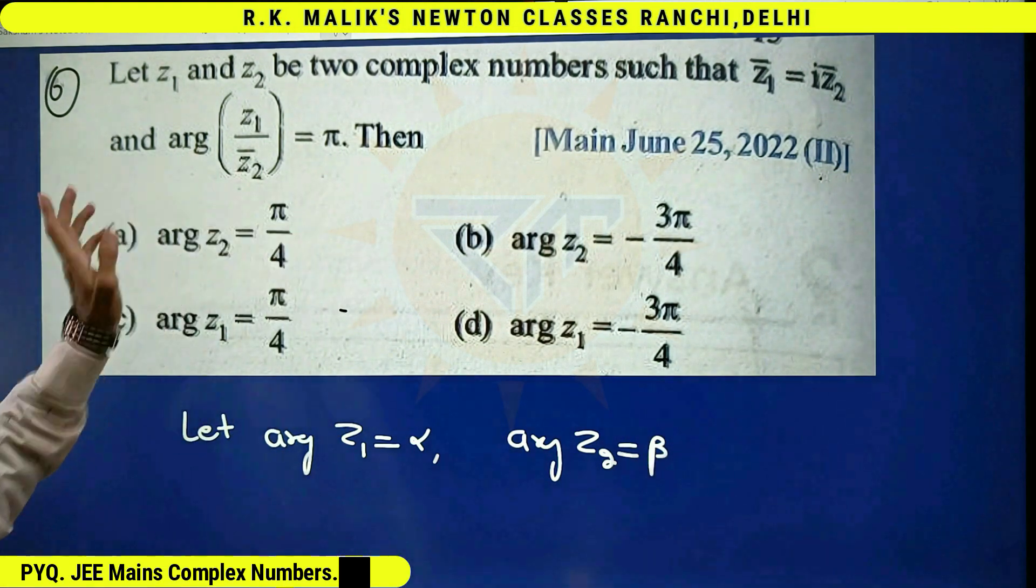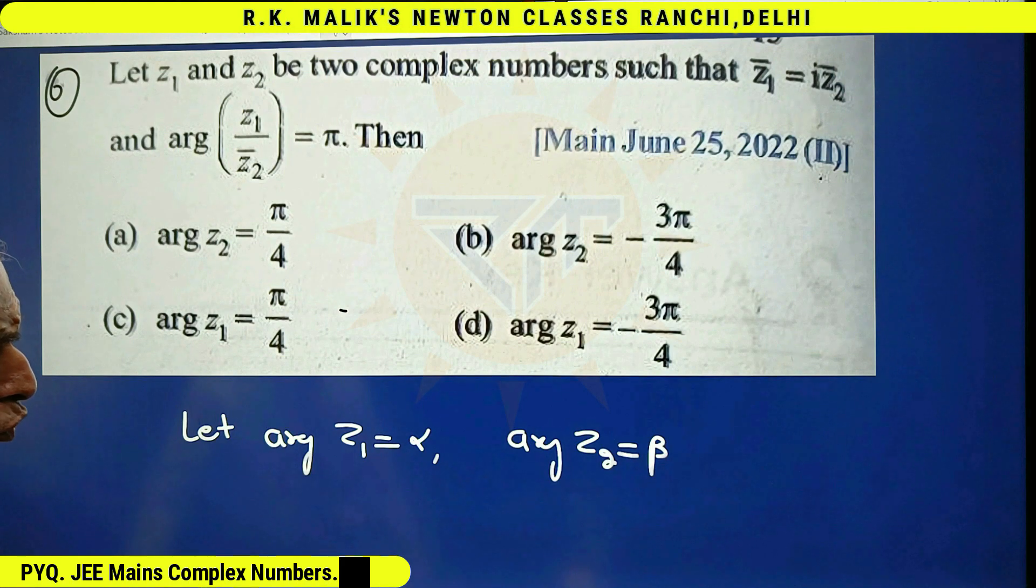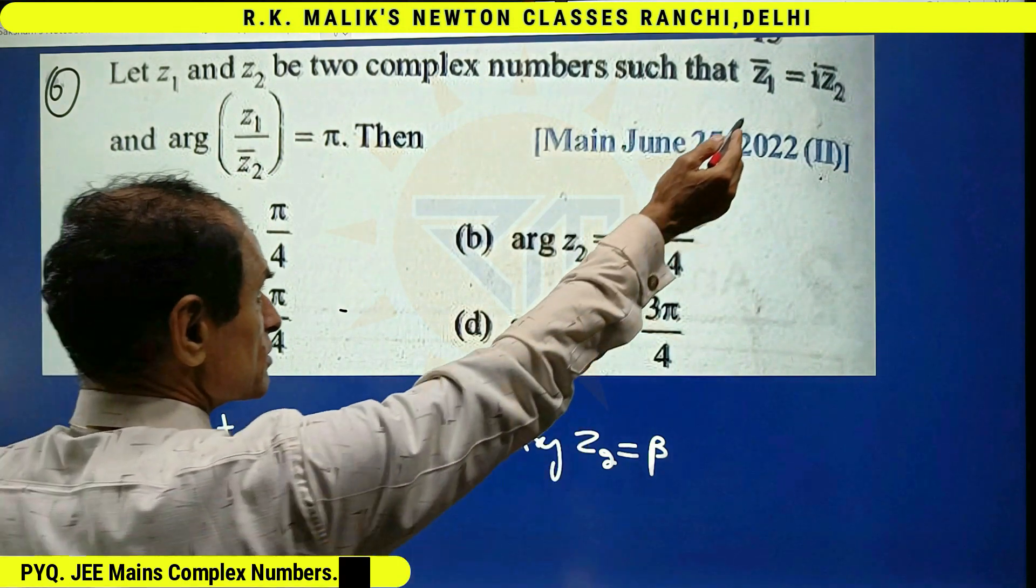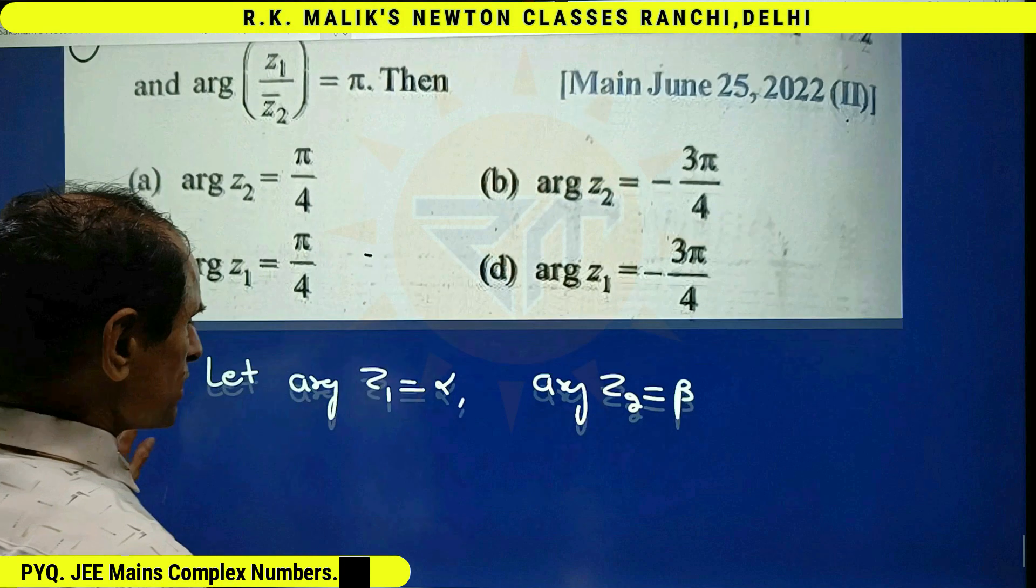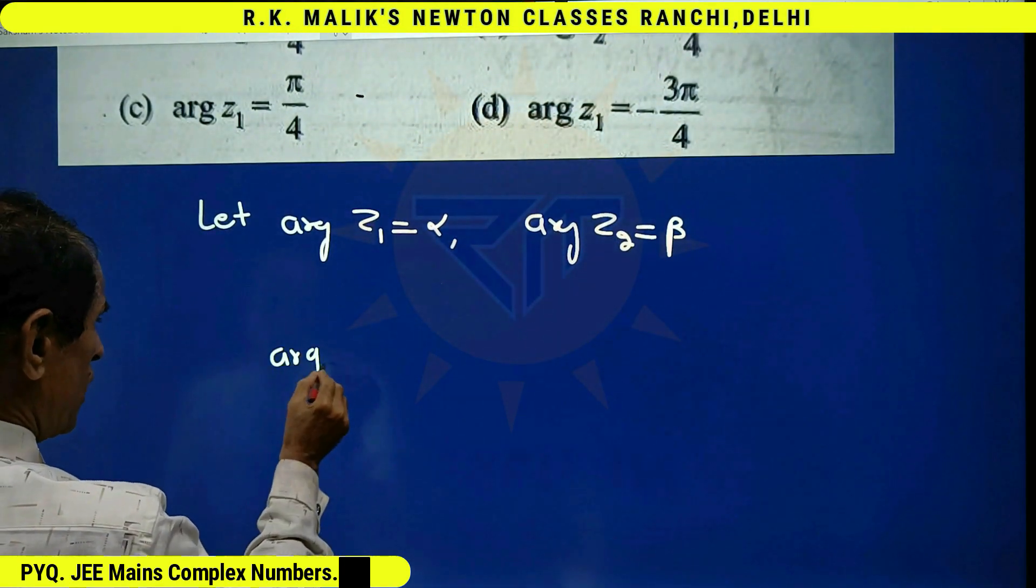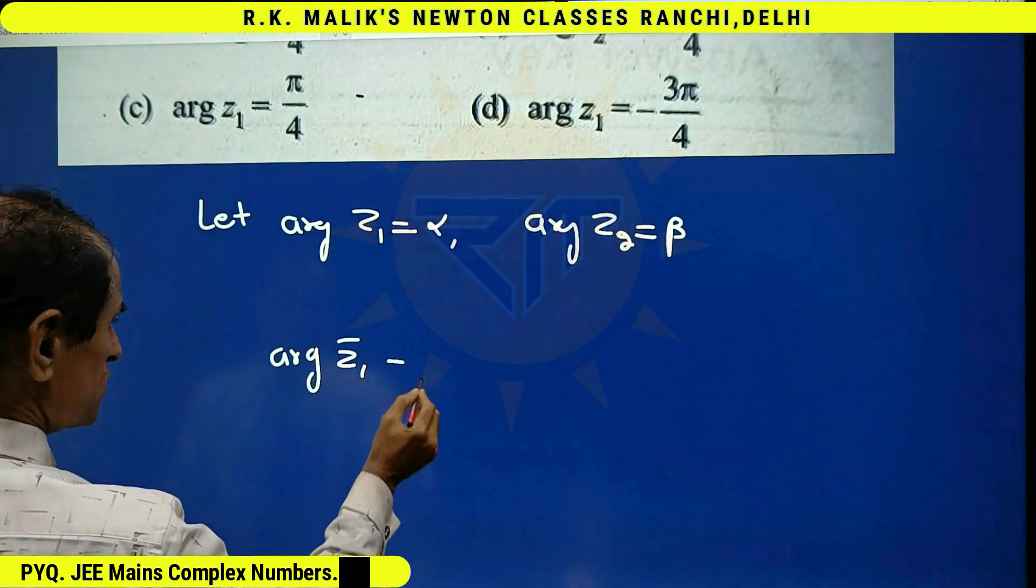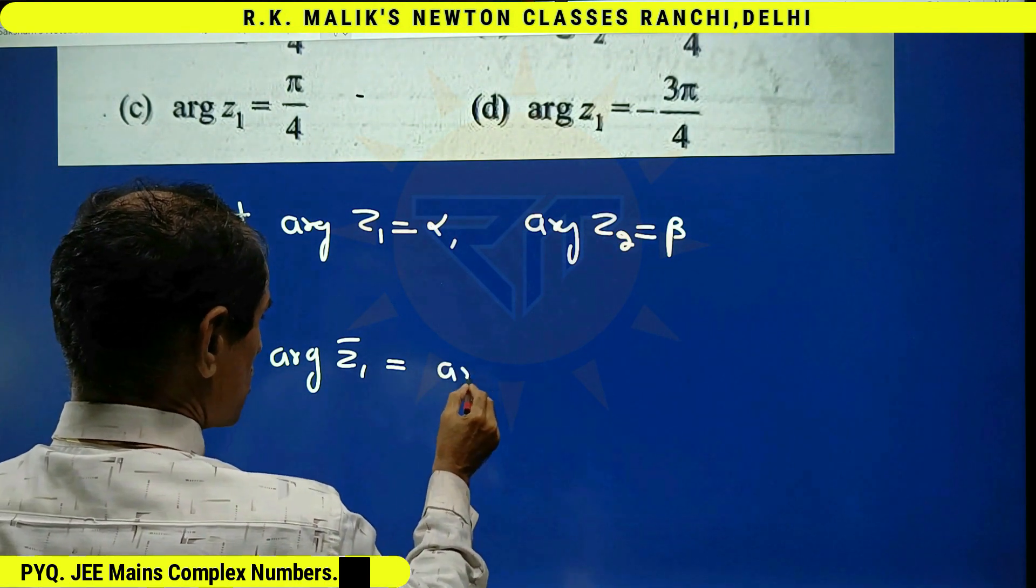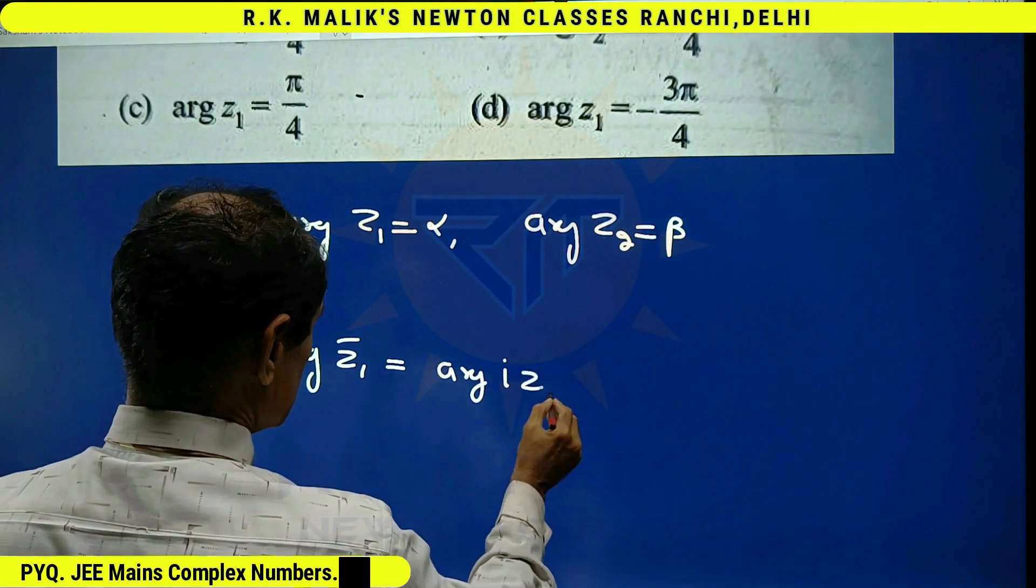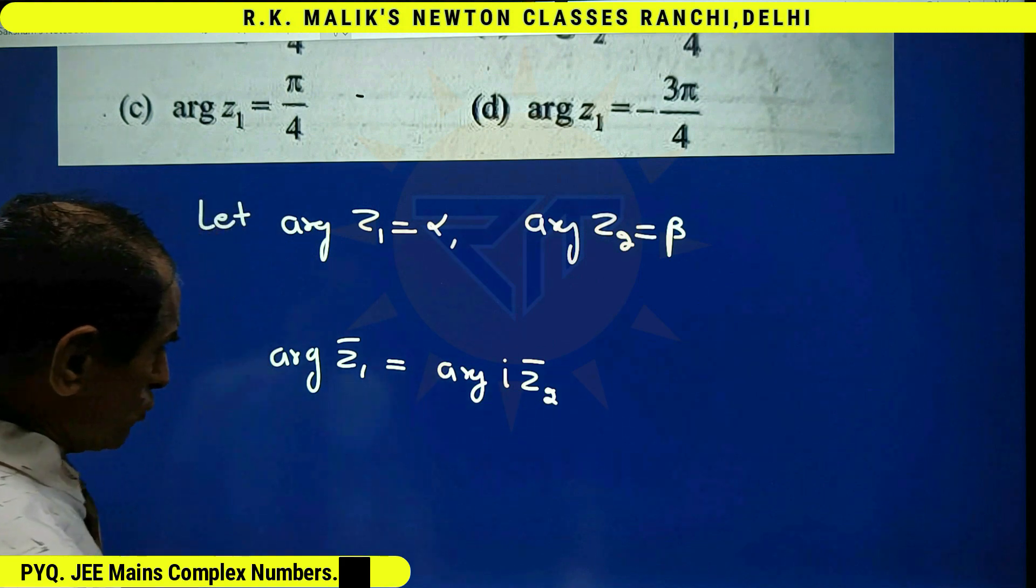With the help of given information, I will find two relations between alpha and beta, and from those two relations I will find the value of alpha and beta. This information implies that argument of z1 bar is equal to argument of i z2 bar.